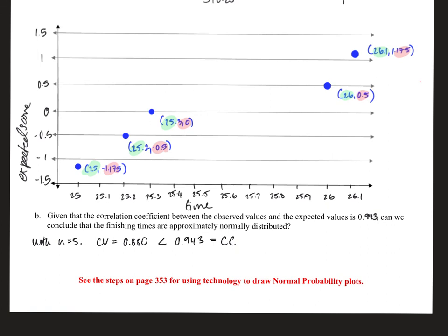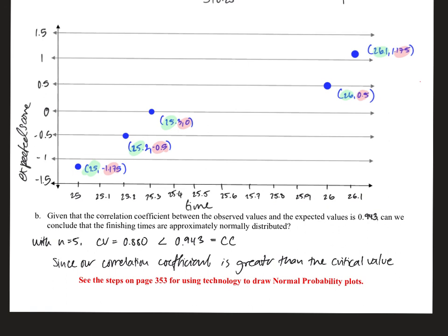Since the correlation coefficient of 0.943 is greater than the critical value of 0.880, we can conclude that the finishing times are approximately normally distributed. Also, if you want to use technology for this, you can see the steps on page 353 of your textbook. That's it for this section — please email me if you have any questions.